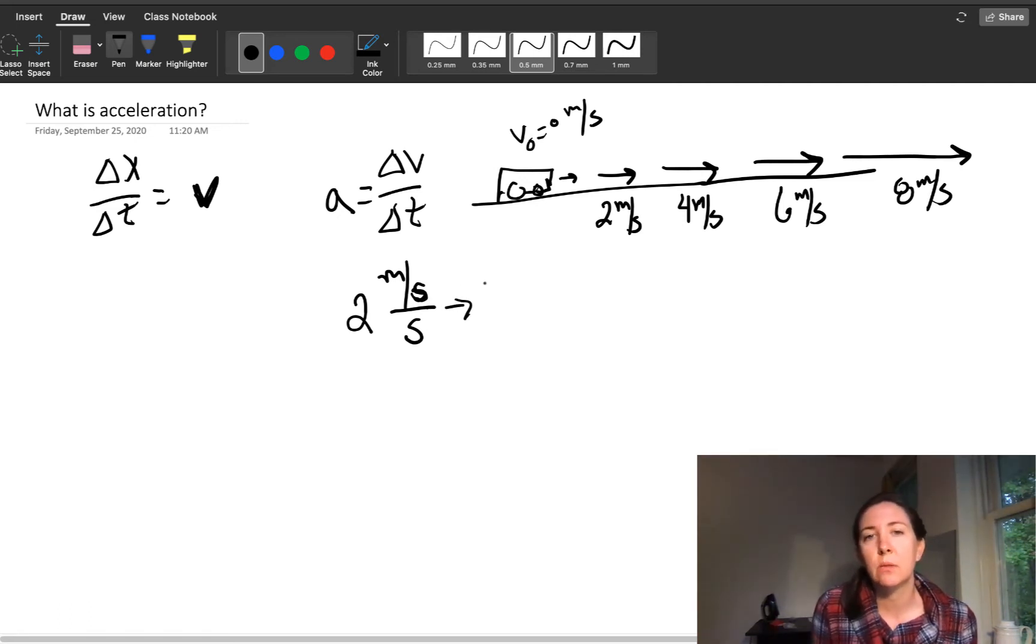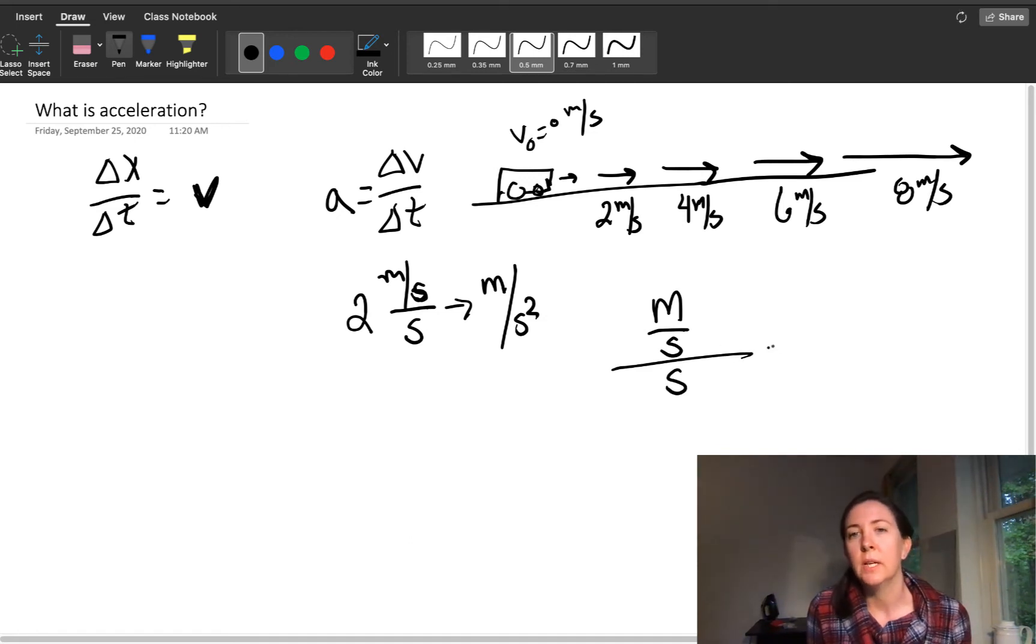Most of the time you'll see this unit written as meters per second squared, because a meter divided by a second divided by another second is just meters over seconds times 1 over seconds. These don't cancel, that's where you get the squared from, they multiply.